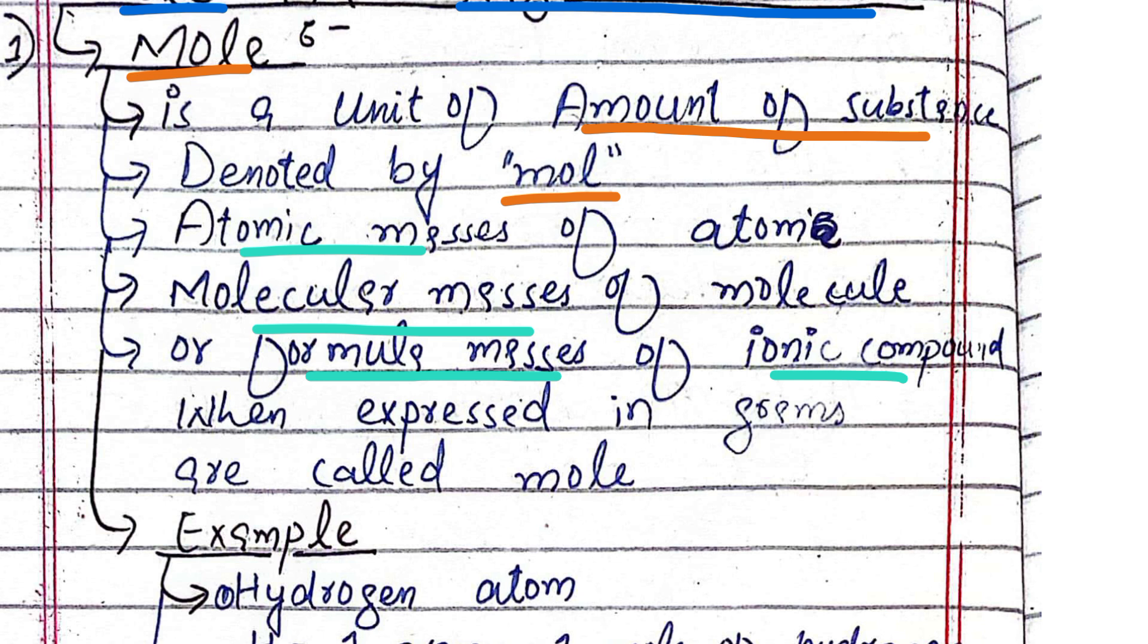Example: atomic mass of atom, molecular mass of molecule, or formula mass of ionic compound. When expressed in grams, these are called mole.